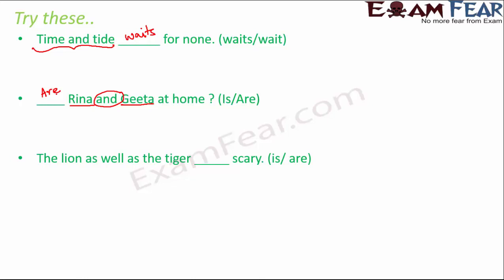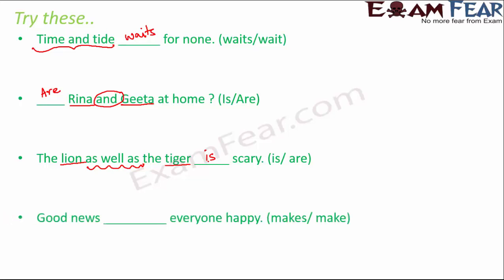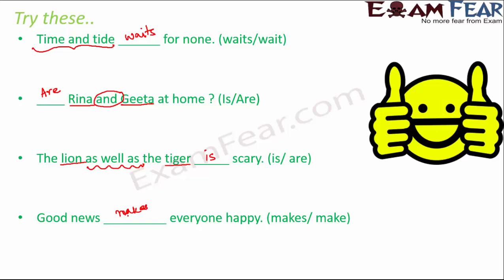The lion as well as the tiger is scary — lion and tiger connected by 'as well as', so we use singular verb 'is'. 'Good news makes everyone happy' — even though 'news' ends in S and appears plural, it is actually singular, so we use singular verb 'makes'. So that covers how to handle multiple nouns and how to use verbs in sentences with multiple nouns.